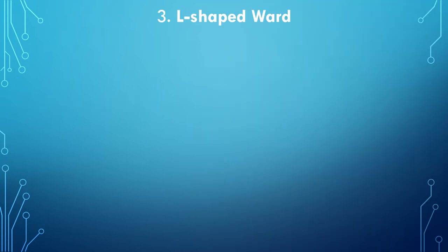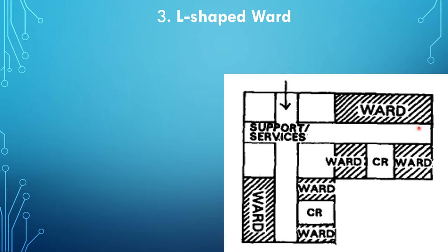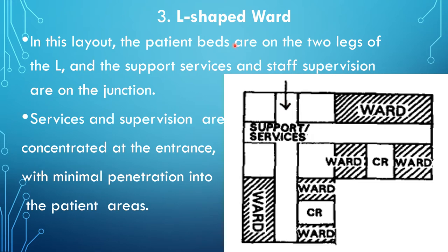The third type is the L-shaped ward. Patient rooms are located on both arms of the L. At the junction of the two arms, support services are placed near the entrance. The staff supervision is concentrated at the entrance with minimum penetration into the patient area.